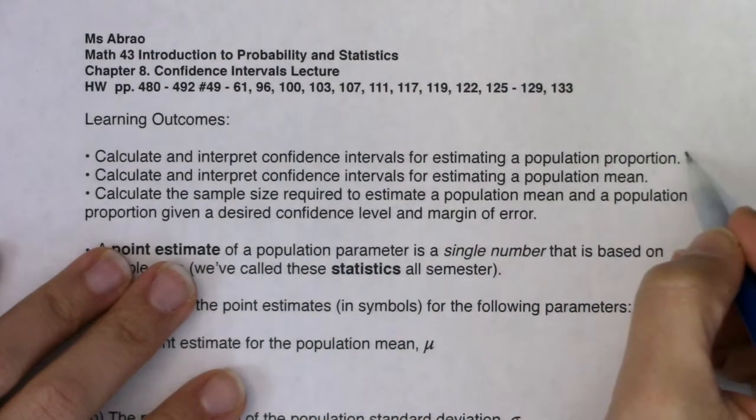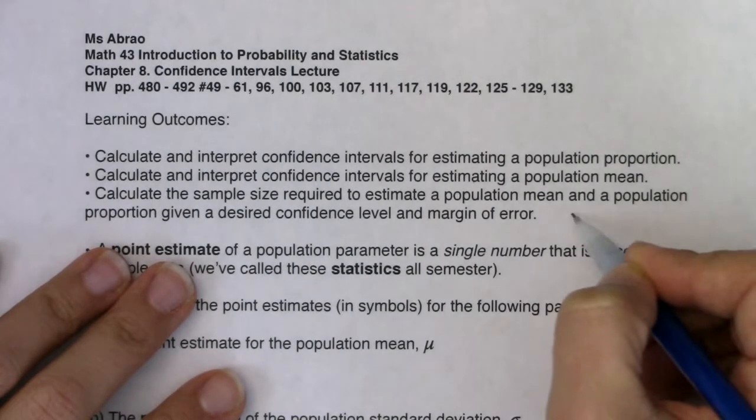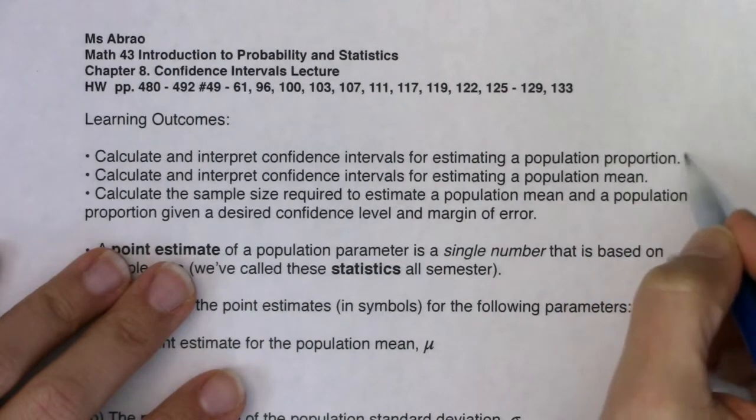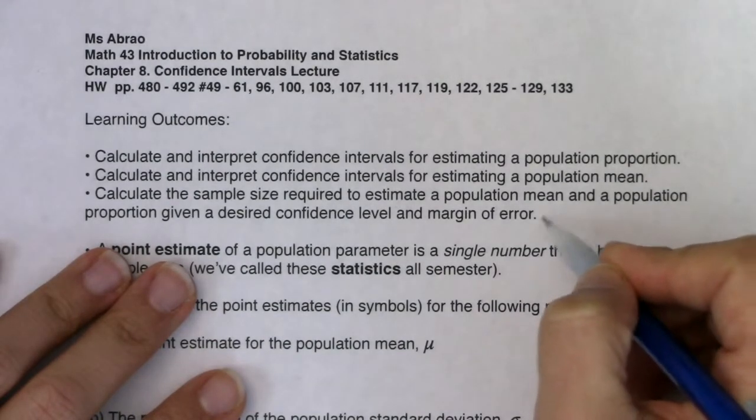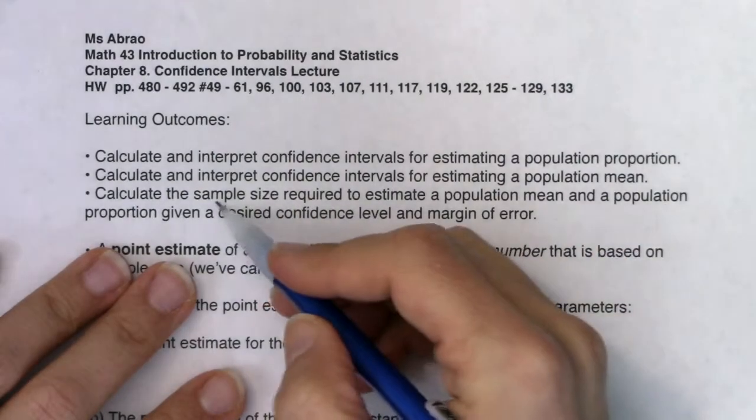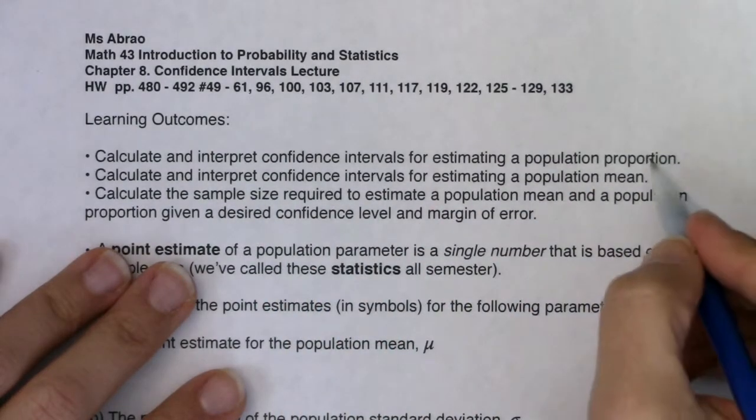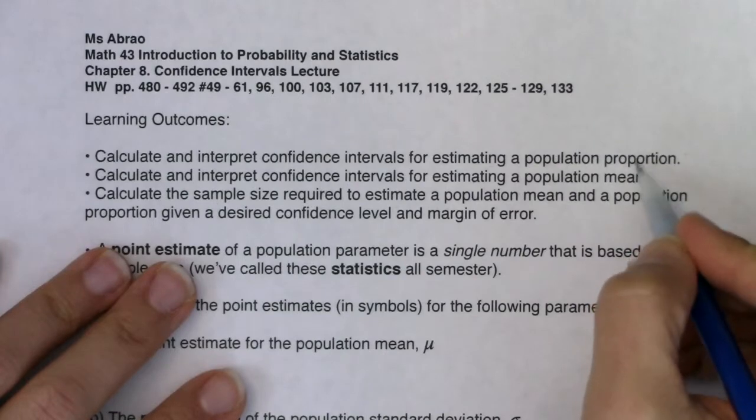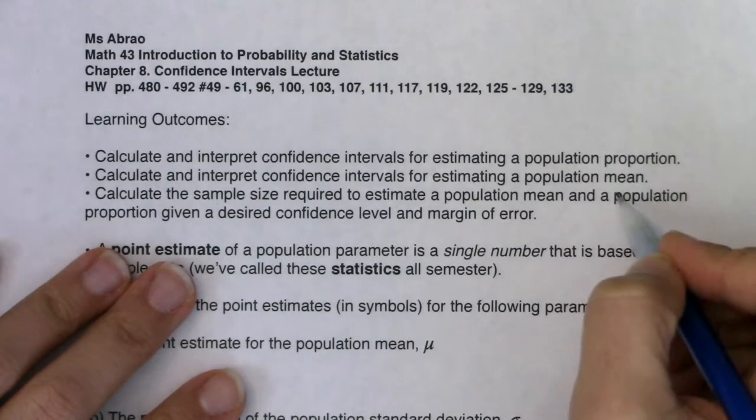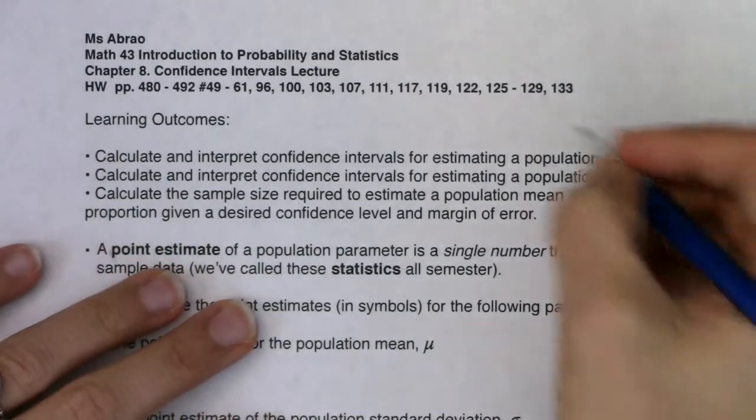You're going to hear me talk about these two problems as what I would say the forward problems - these are the usual version, and this is the backwards problem. So forward, when I give you a bunch of data, you get me a confidence interval. Backward, I give you a margin of error and a confidence level, and you get me the sample size. We're going to do this in proportion land and mean land, and this is going to tie into our two sampling distributions.